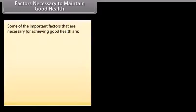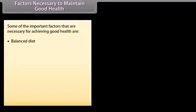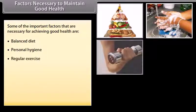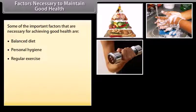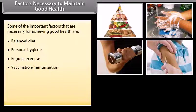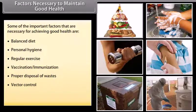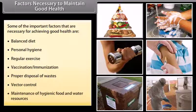Some of the important factors necessary for achieving good health are: balanced diet, personal hygiene, regular exercise, vaccination and immunization, proper disposal of wastes, vector control, and maintenance of hygienic food and water resources.